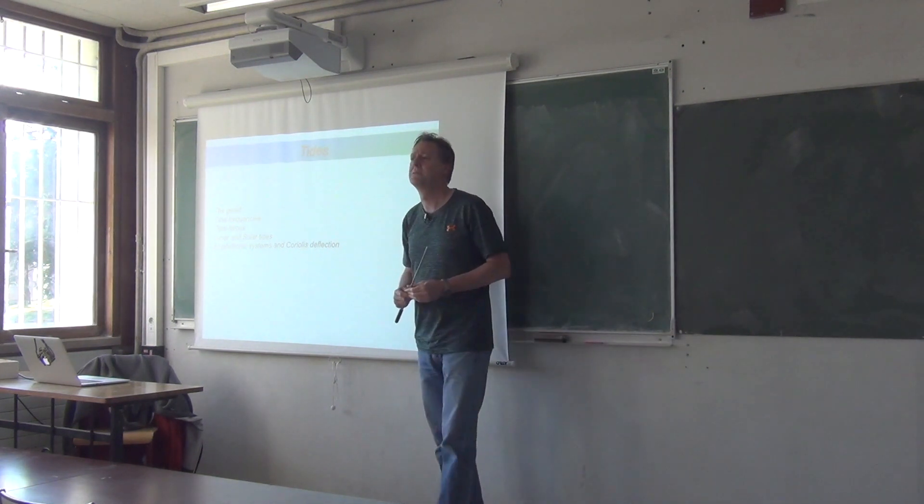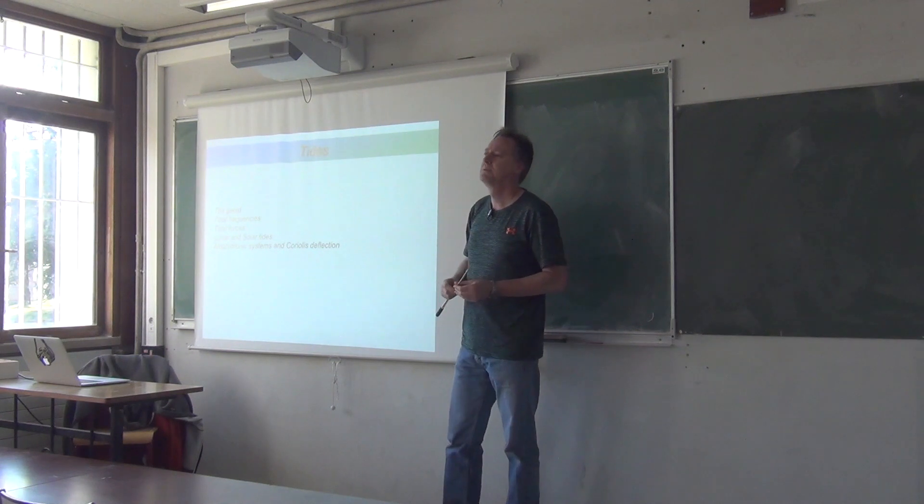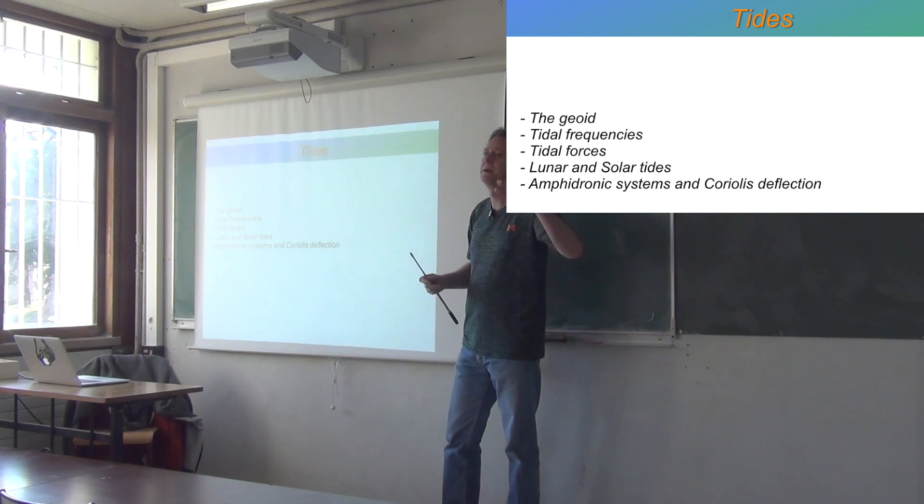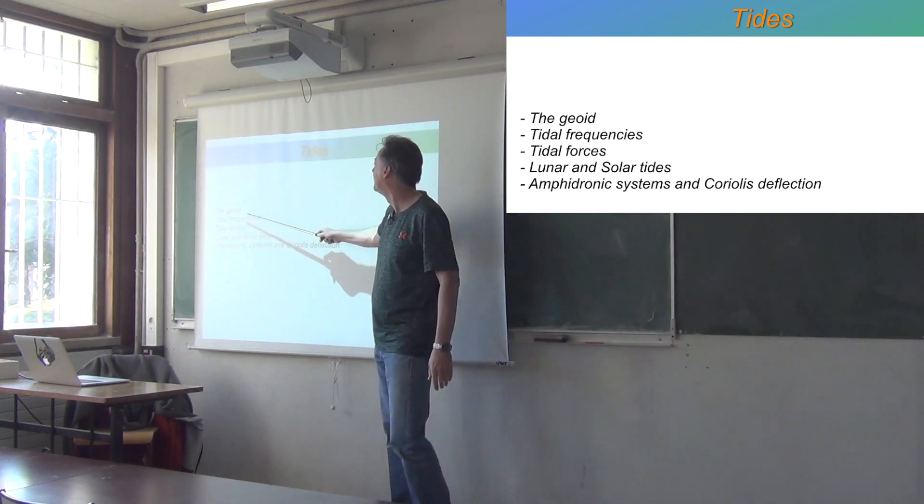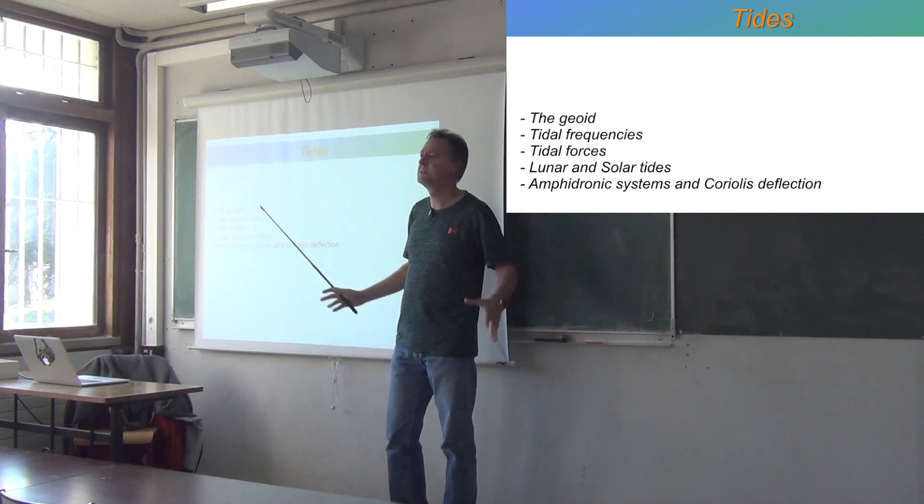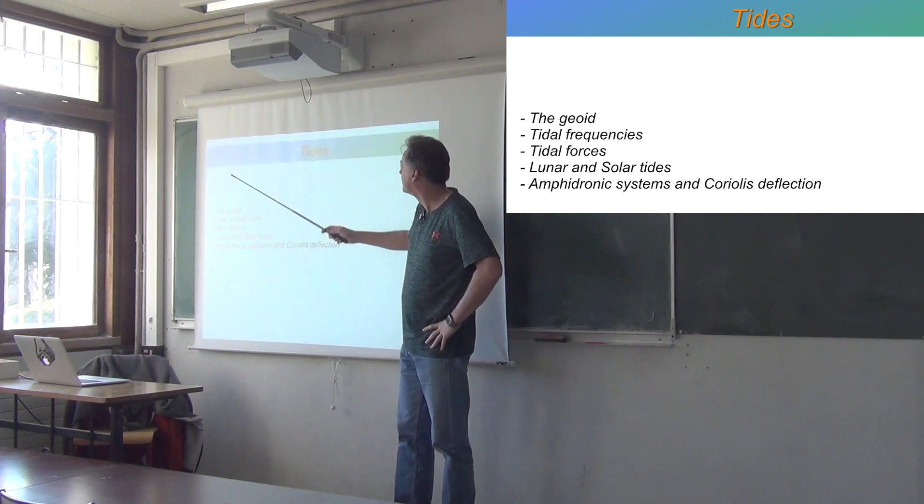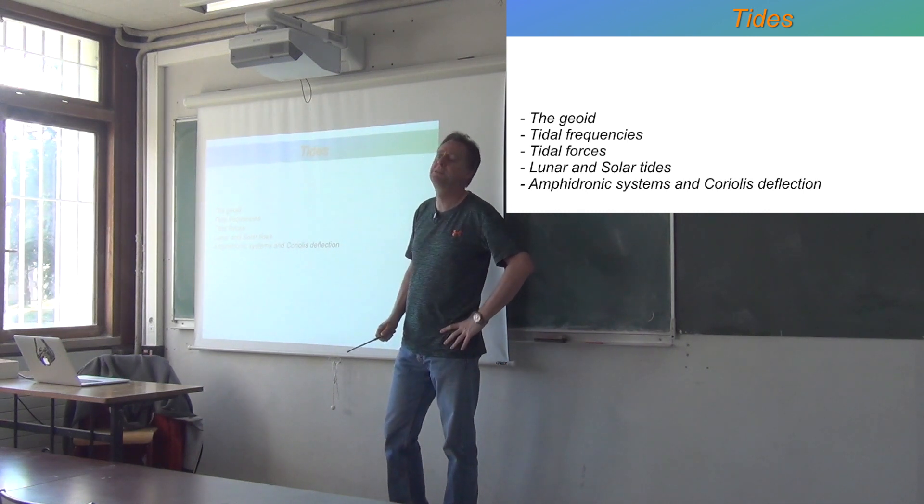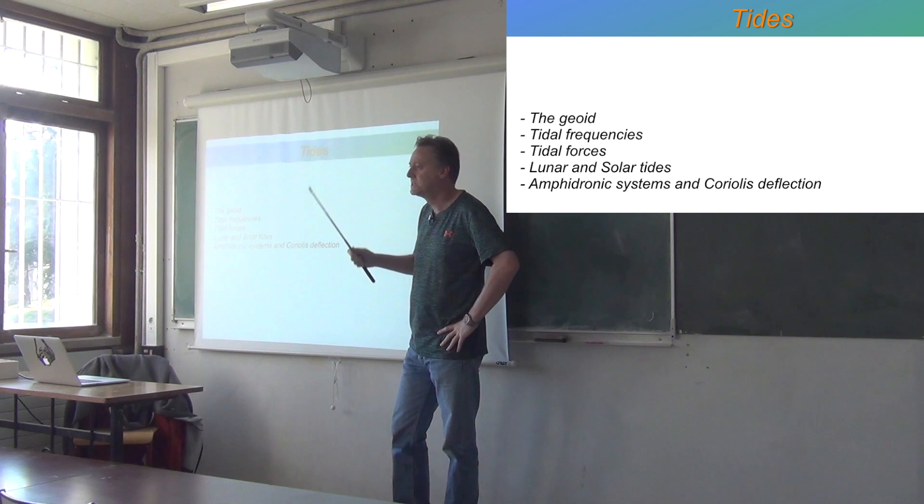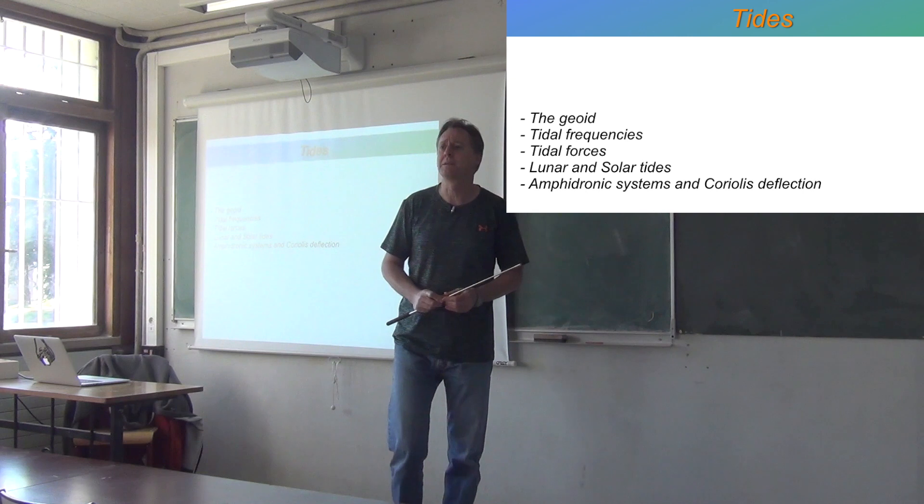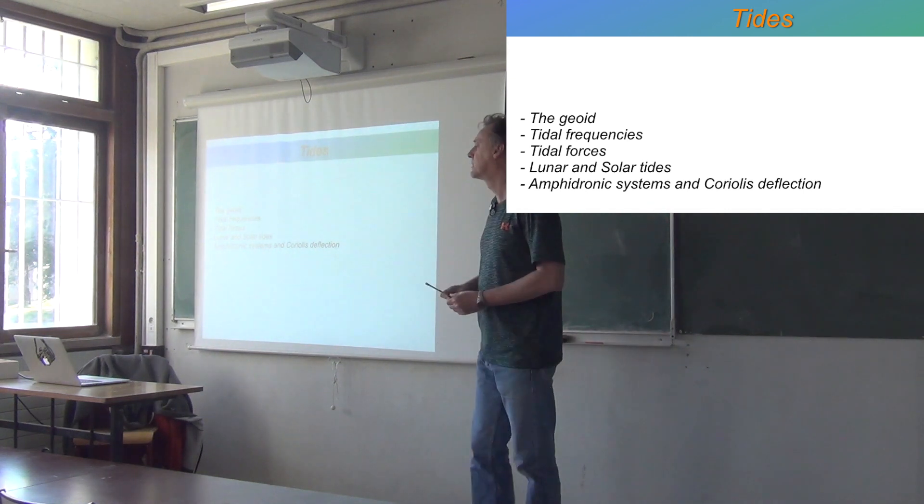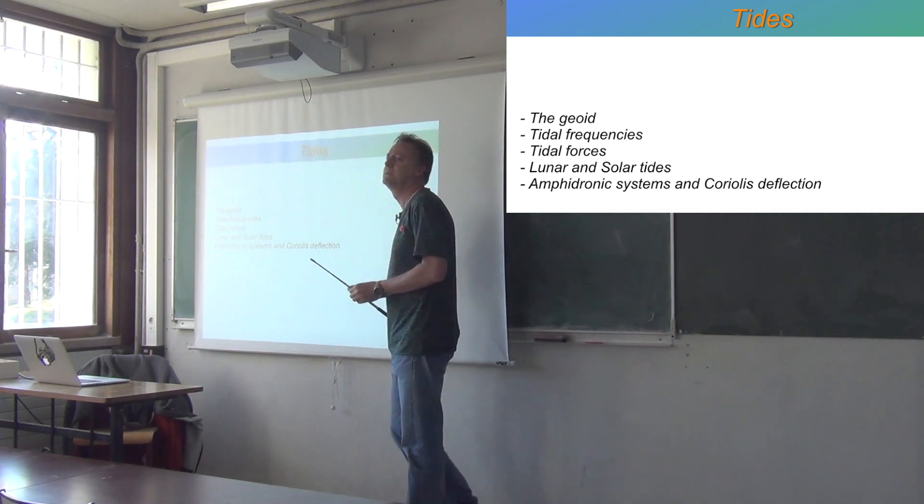Tides are variations in the sea level. So the first thing you have to think about is what is the sea level that you're varying around? What is the reference sea level? So we'll talk about the shape of the Earth and the shape of the mean sea level. That's called the geoid. And then we'll look at different tidal frequencies, observations of variations in the sea level in different places. And then we'll try to explain it. So what is it that causes the tides?